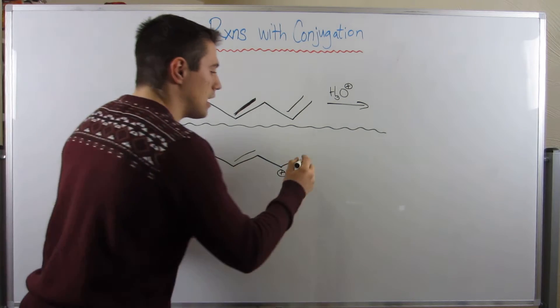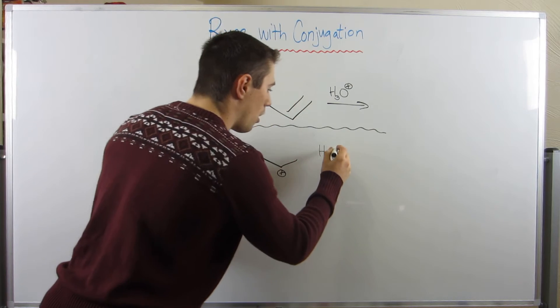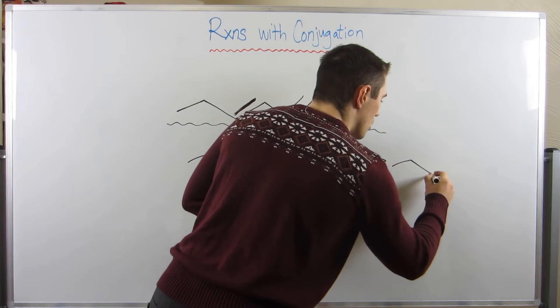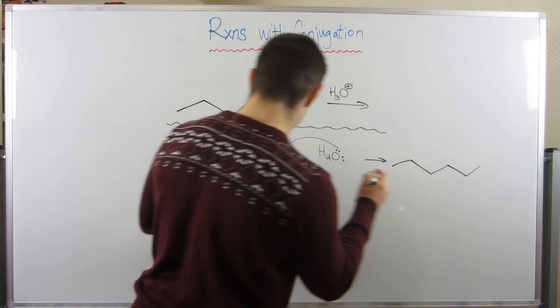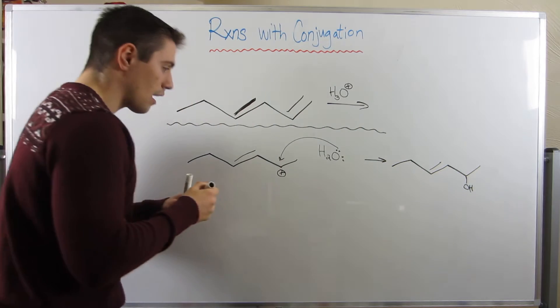So here's kind of the point of all of this. We're going to get more than one product here, and here's why. So, normally, in this reaction, we just have water come back, and water would attack at this position. If we cleaned him up, we would end up with this alcohol product right there.